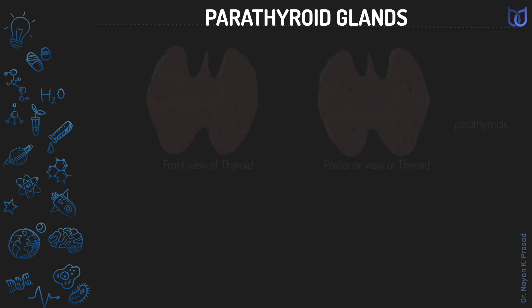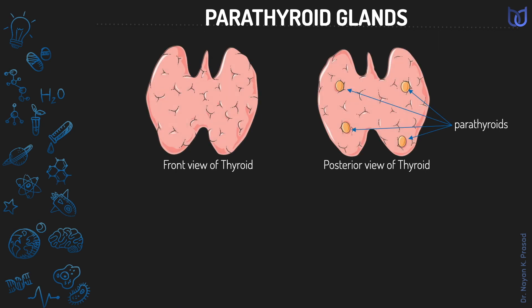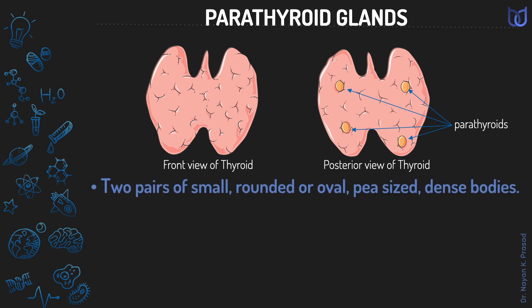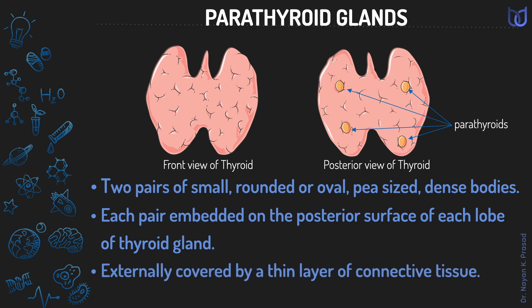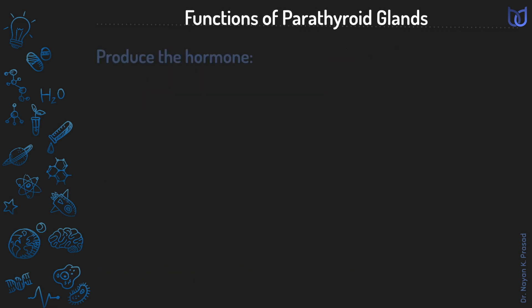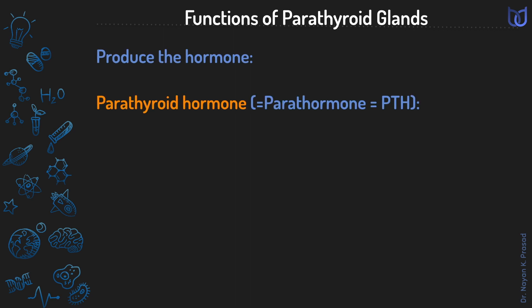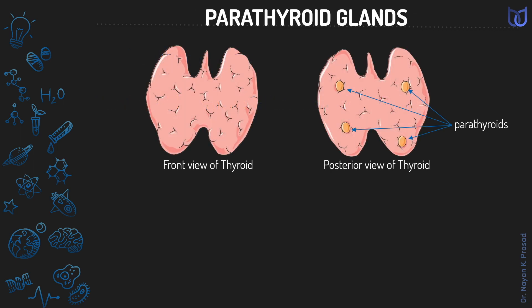Another endocrine gland is the parathyroid glands. These are usually two pairs of small rounded or oval dense bodies. Each pair remains embedded on the posterior surface of each lobe of the thyroid gland. Parathyroid glands are covered by a thin layer of connective tissue and produce the hormone parathyroid hormone (PTH). Both the parathyroid and thyroid glands remain attached and lie in the neck region.